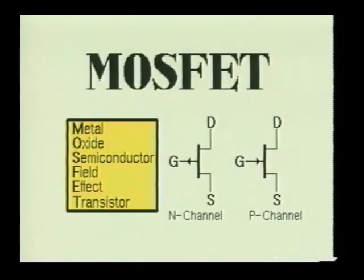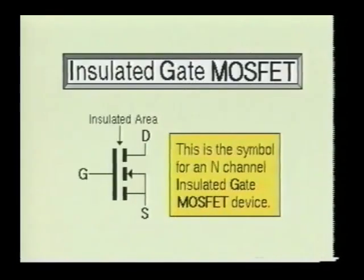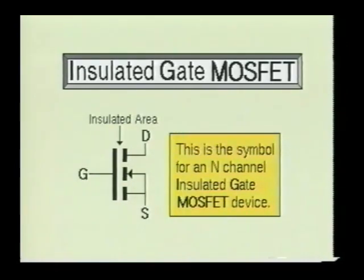Here we see a MOSFET device. MOSFET stands for Metal Oxide Semiconductor Field Effect Transistor. There are many types of MOSFET devices. This device has an insulated material placed between the gates and the channel material, and is commonly referred to as an insulated gate metal oxide semiconductor field effect transistor.